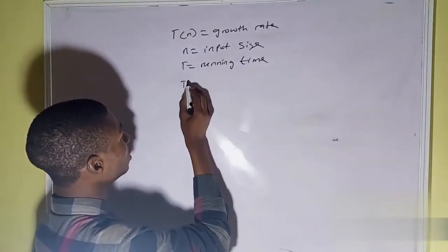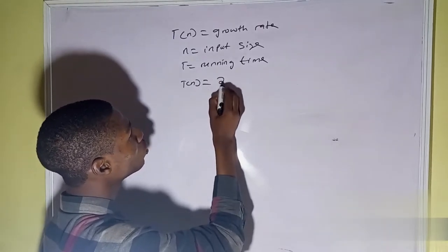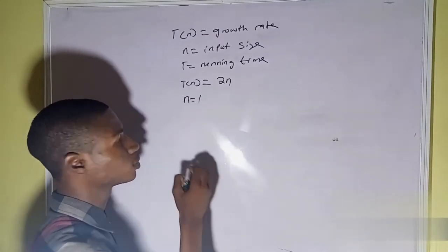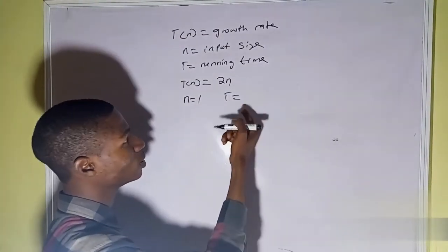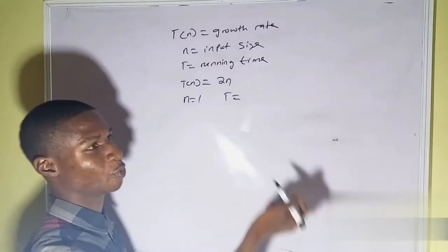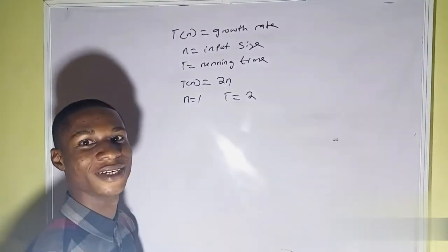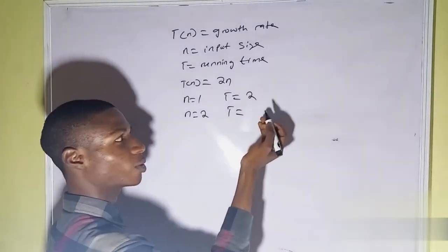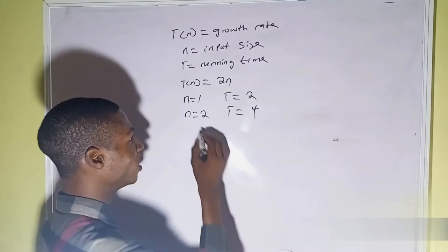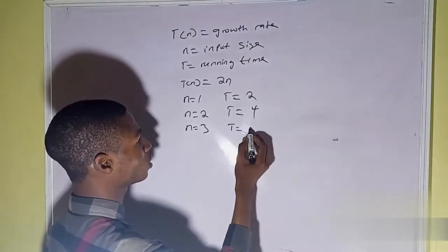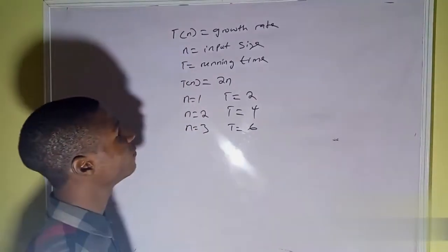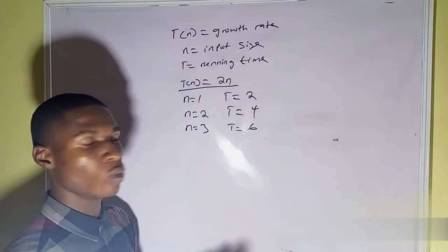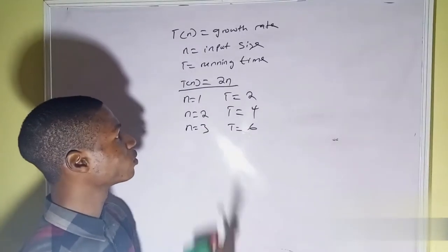Let's say T of n equals 2n. So when n equals 1, T is going to be 2. When n equals 2, T will be equal to 4. So we can see that if we are given T of n, we'll be able to derive the running time.